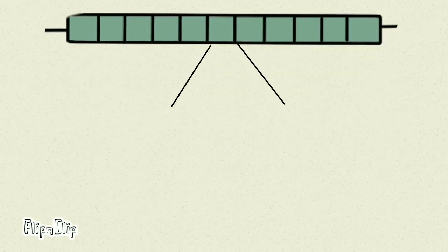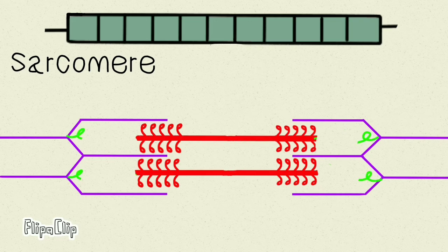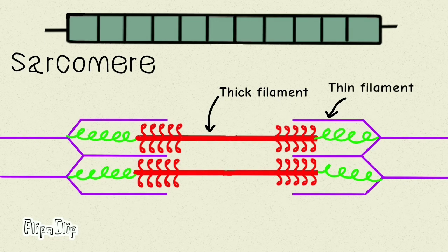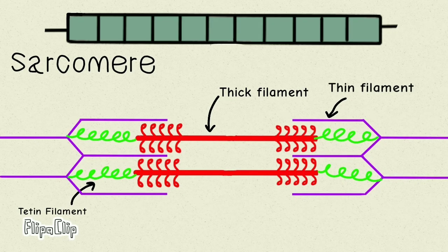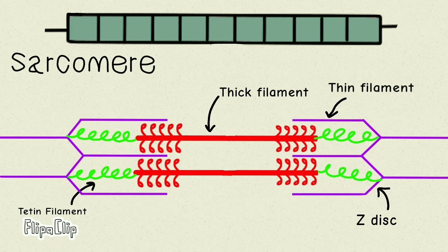Inside each of the myofibrils, as we understand the sarcomere structure, there are two types of filaments: the thick filament and the thin filament. As the name suggests, the thick filament is obviously thicker than the thin filament. Both of these are connected by a titin filament which is a structural protein. The thin filament is arranged in such a way that at the ends of each sarcomere it forms a Z-disc — named because the pattern is in the shape of the alphabet Z. In the middle of the thick and thin filaments there is an M-line, which is also formed by a structural protein.